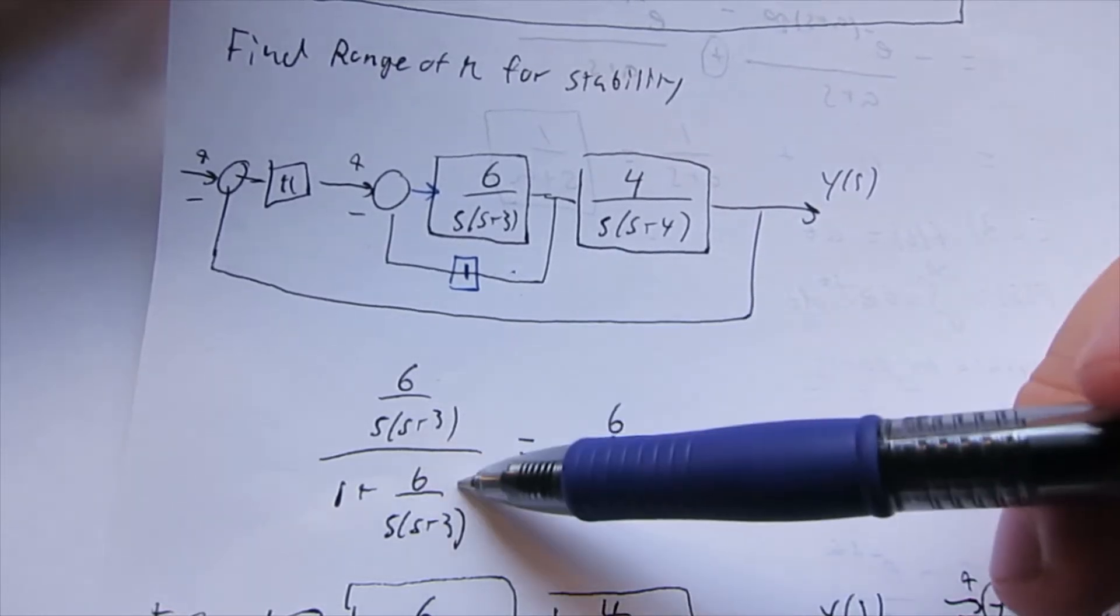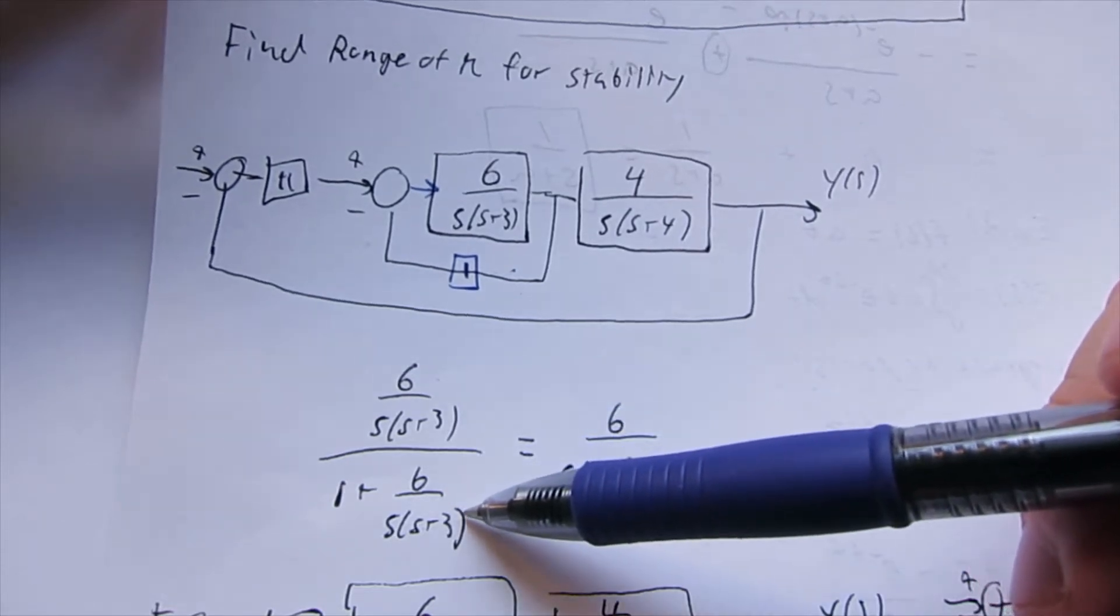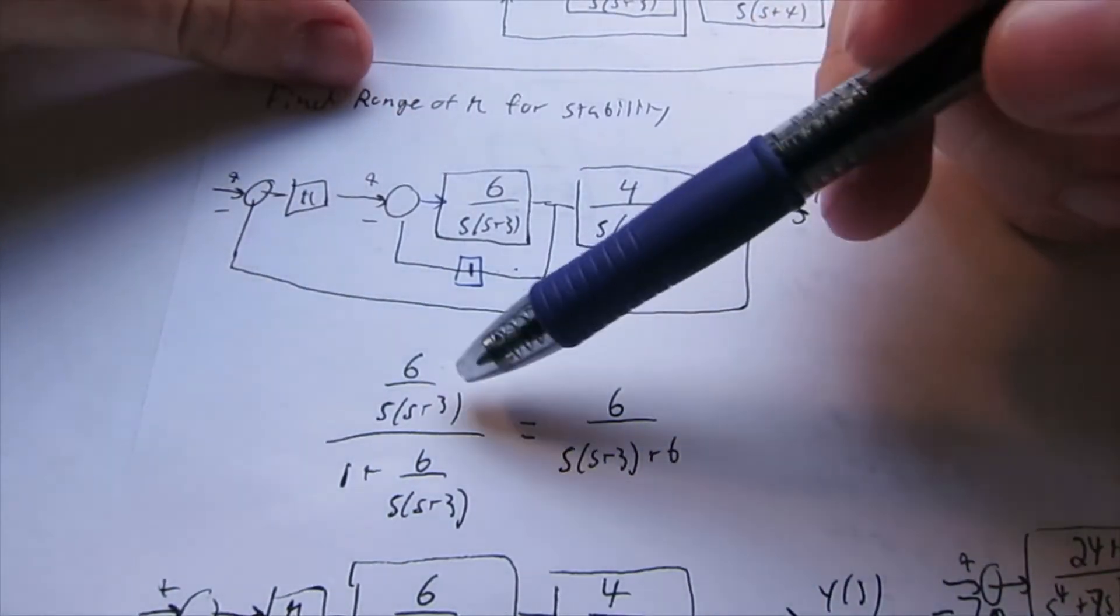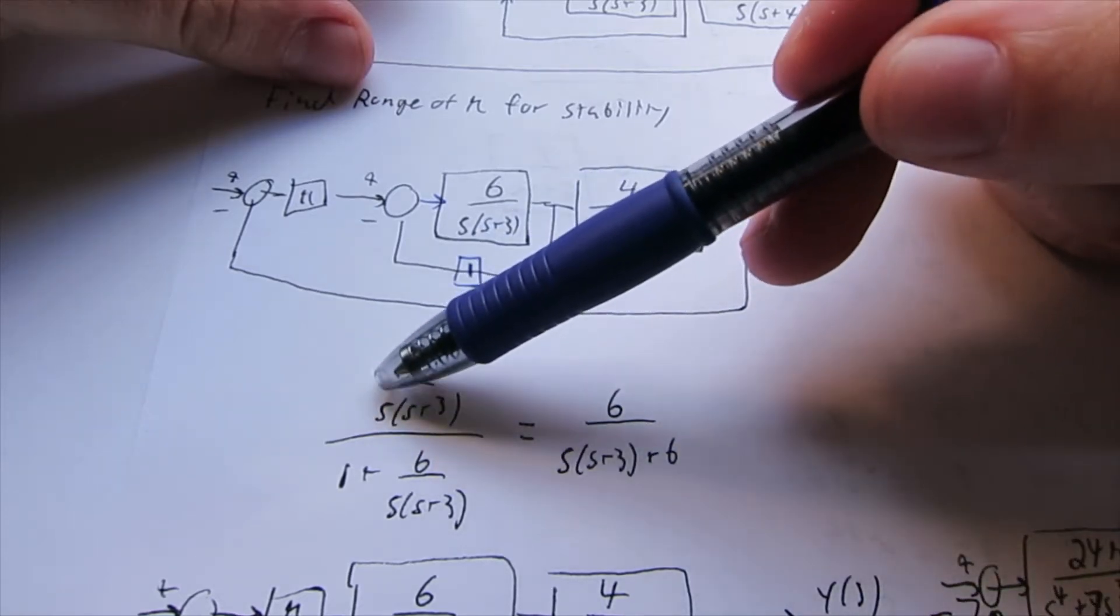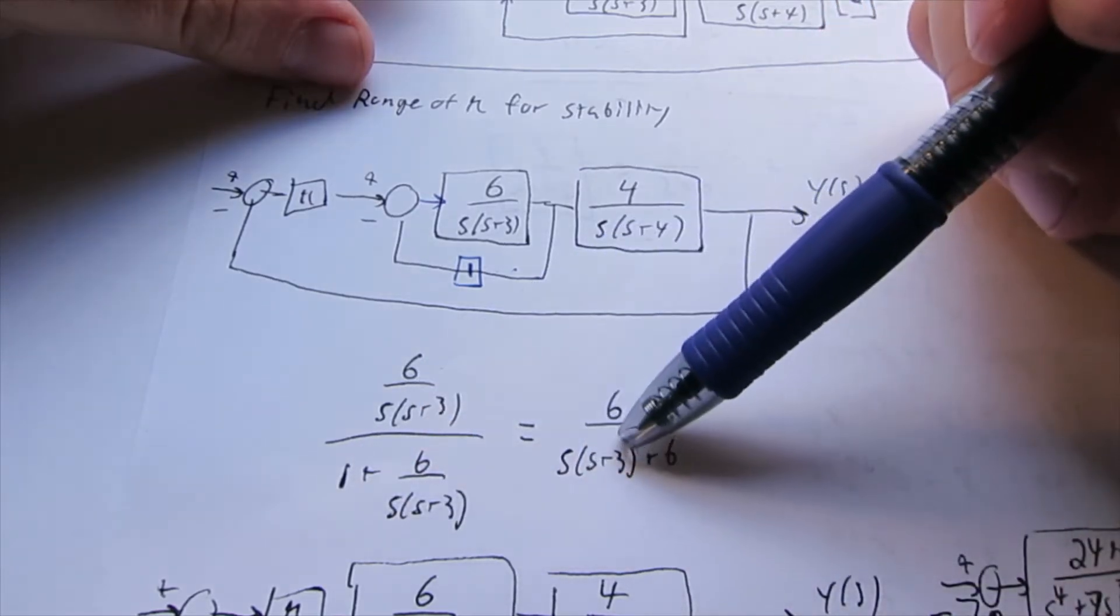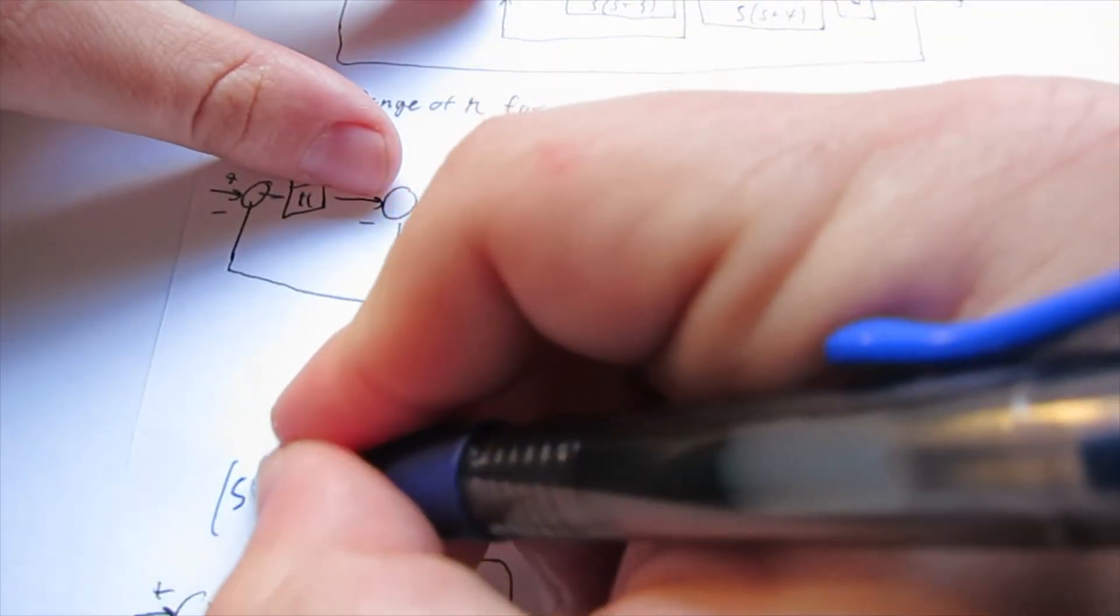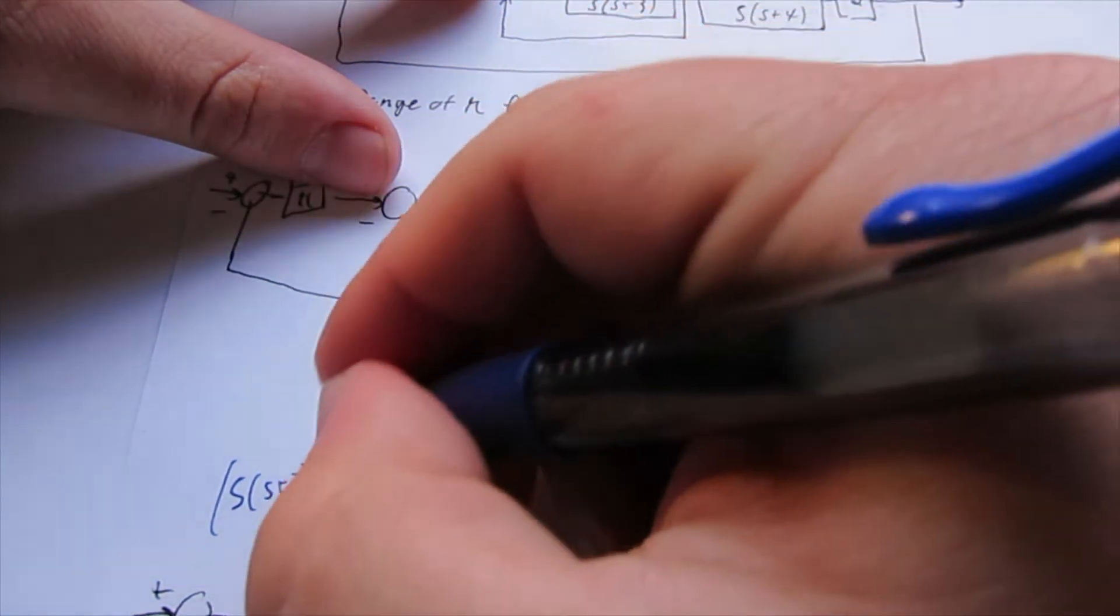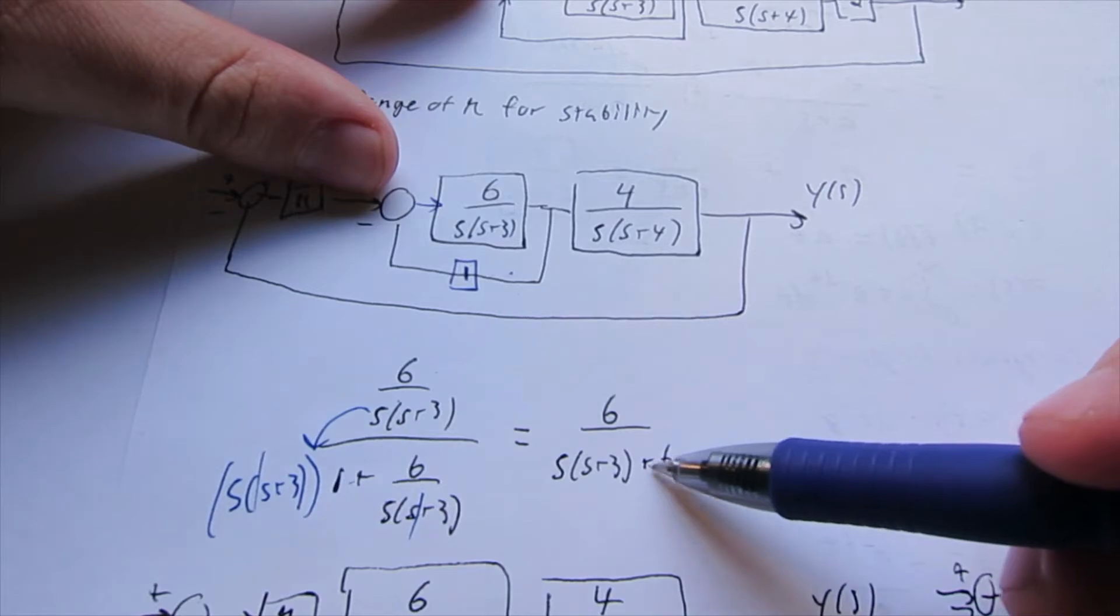Then we can reduce that by multiplying 6 over S+3. So we can reduce this block right here to this, because we divide everything. So we move this S(S+3) to the denominator, so that 1 times this is just this. Let me just write this out more explicitly. So we multiply this through, so this just moves here, and then that becomes that, and then these two cancel out, and we're just left with this.